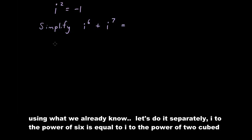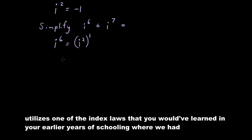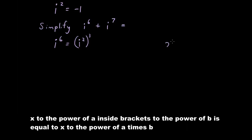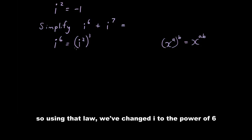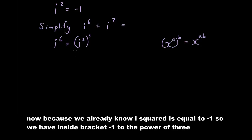Let's do i to the power of 6 separately. i to the power of 6 is equal to i squared, all to the power of 3. This utilizes one of the index laws from earlier years of schooling, where x to the power of a, inside brackets to the power of b, equals x to the power of a times b. So using that law we've changed i to the power of 6 into i squared to the power of 3. Now because i squared equals negative 1, we have negative 1 to the power of 3.